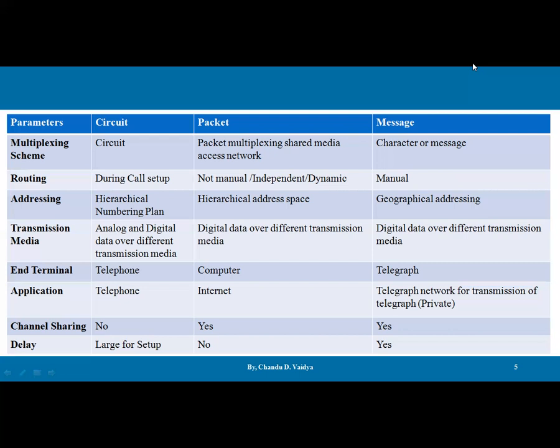Telegraph is a private network. Application: telephone is an application of circuit switching. The internet is an example of packet switching. Telegram via telegraph is an example of message switching — it is a private network for transmission of telegrams. Channel sharing: there is no channel sharing in circuit switching. But in packet switching, there is channel sharing, and in message switching also, there is channel sharing.